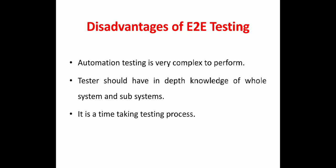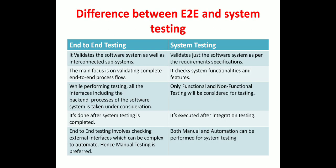End-to-end testing validates a software system as well as its interconnected subsystems. By comparison, system testing validates just the software system as per the requirements, checking according to the software requirement specification. The main focus of end-to-end testing is on validating the complete end-to-end process flow, while system testing checks system functionalities and features.